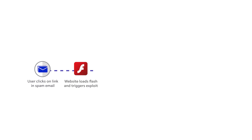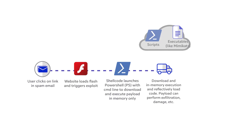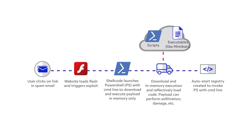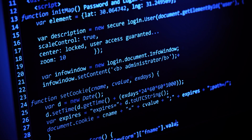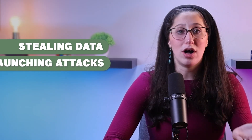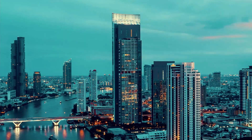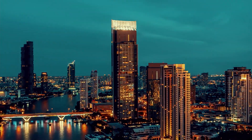So first things first, what is fileless malware? Fileless malware is a type of malicious software that operates entirely in the computer's memory, leaving no trace on the hard drive. Unlike traditional malware, which relies on files stored on your computer, fileless malware infiltrates a system without a trace. This type of malware typically exploits vulnerabilities in legitimate software and scripts already present on your system. Once inside, it can perform a bunch of malicious actions, such as stealing data, launching attacks, or taking control of the system. The scariest part is that it can go undetected for an extended period of time.